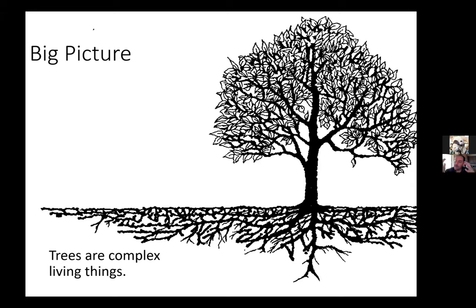Trees are systems where the roots are in balance with the shoots. The roots take up water and nutrients that are transported to the above-ground portions of the plant. Energy synthesis happens in the canopy — energy is created and some of it moves to other parts of the plant. In landscapes, we often just see the trunk and the leaves, but there's also this root system and the relationships between the different parts.